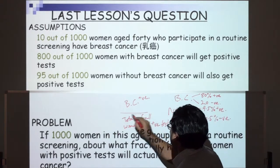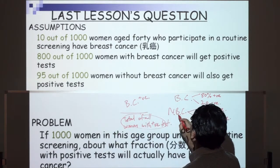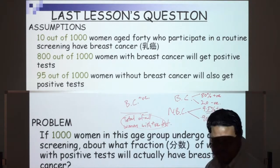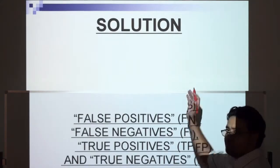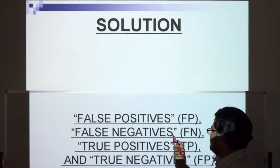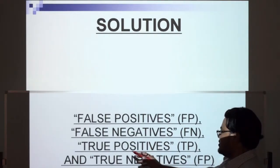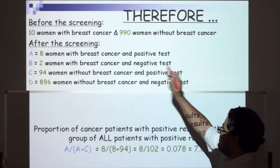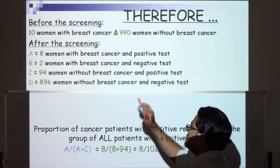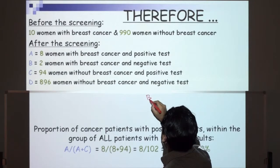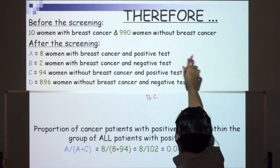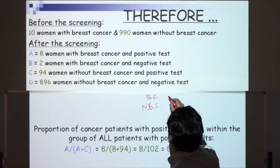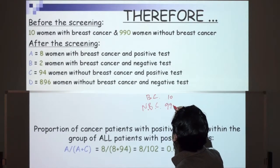This can also include those who don't have breast cancer but have a positive test. The solution has a lot to do with false positives, false negatives, true positives, and true negatives. Before the screening of 1,000 women, 10 will have breast cancer and 990 women will not have breast cancer.